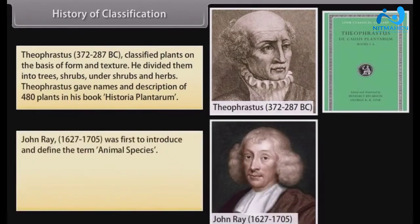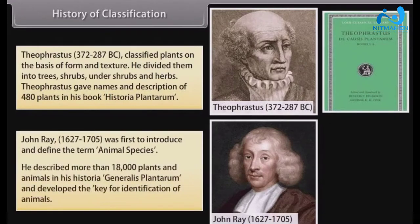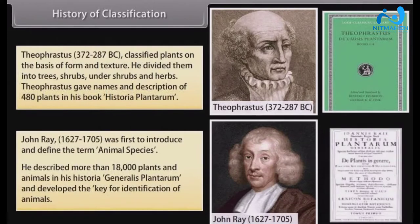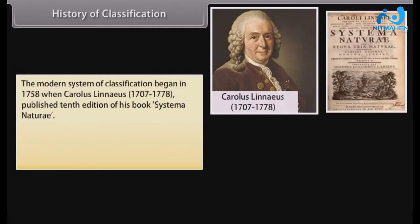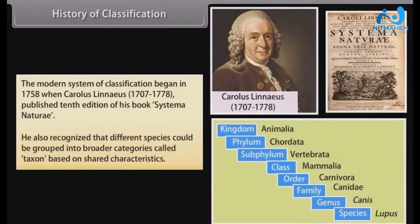John Ray (1627–1705) was the first to introduce and define the term animal species. He described more than 18,000 plants and animals in his Historia Generalis Plantarum and developed the key for identification of animals. The modern system of classification began in 1758 when Carolus Linnaeus (1707–1778) published the 10th edition of his book Systema Naturae. He also recognized that different species could be grouped into broader categories called taxon, based on shared characteristics.